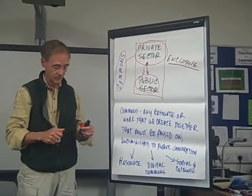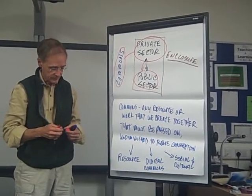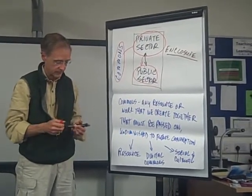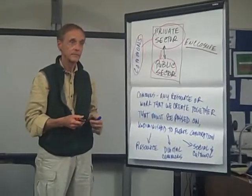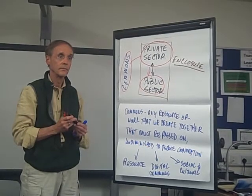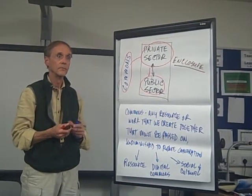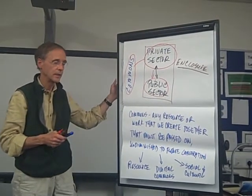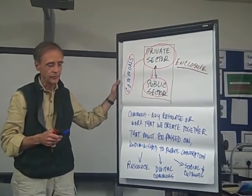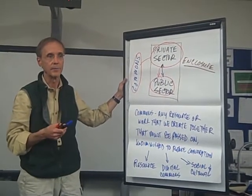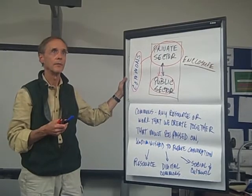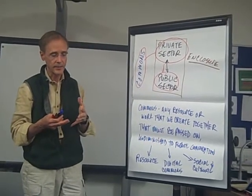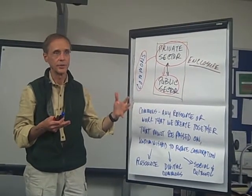I don't want to forget this question — when you say the commons must be passed on undiminished to future generations, can you justify that further? Generally, within the framework of how thinking is emerging about the commons, part of the ethos or ethic of the commons is that it has a multi-generational dimension to it.